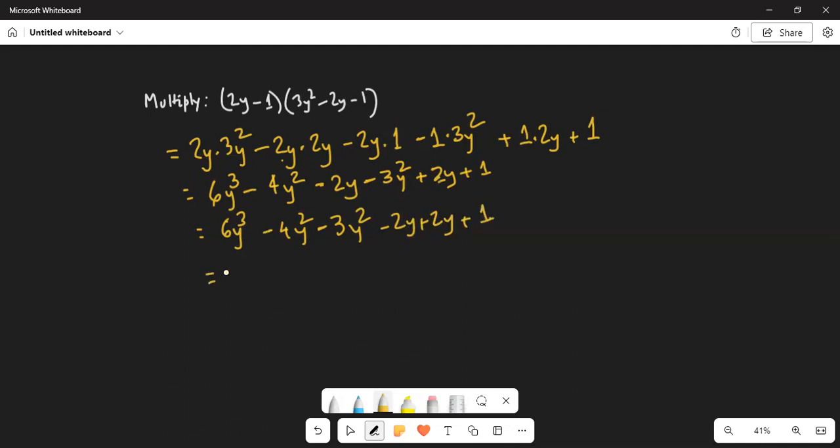So the final answer is 6y cubed minus—both coefficients are negative, so we add 4 plus 3 but return the negative sign—minus 7y squared. Now minus 2y and plus 2y cancel, so plus 1. This is your final answer: 6y cubed minus 7y squared plus 1.